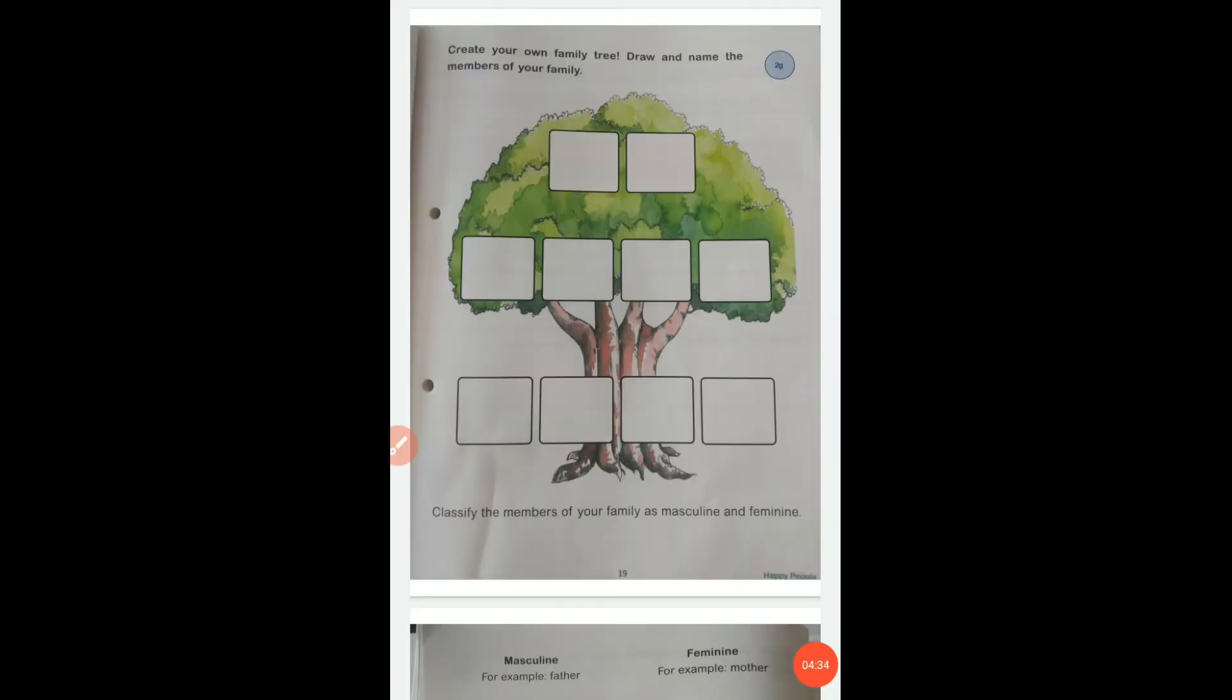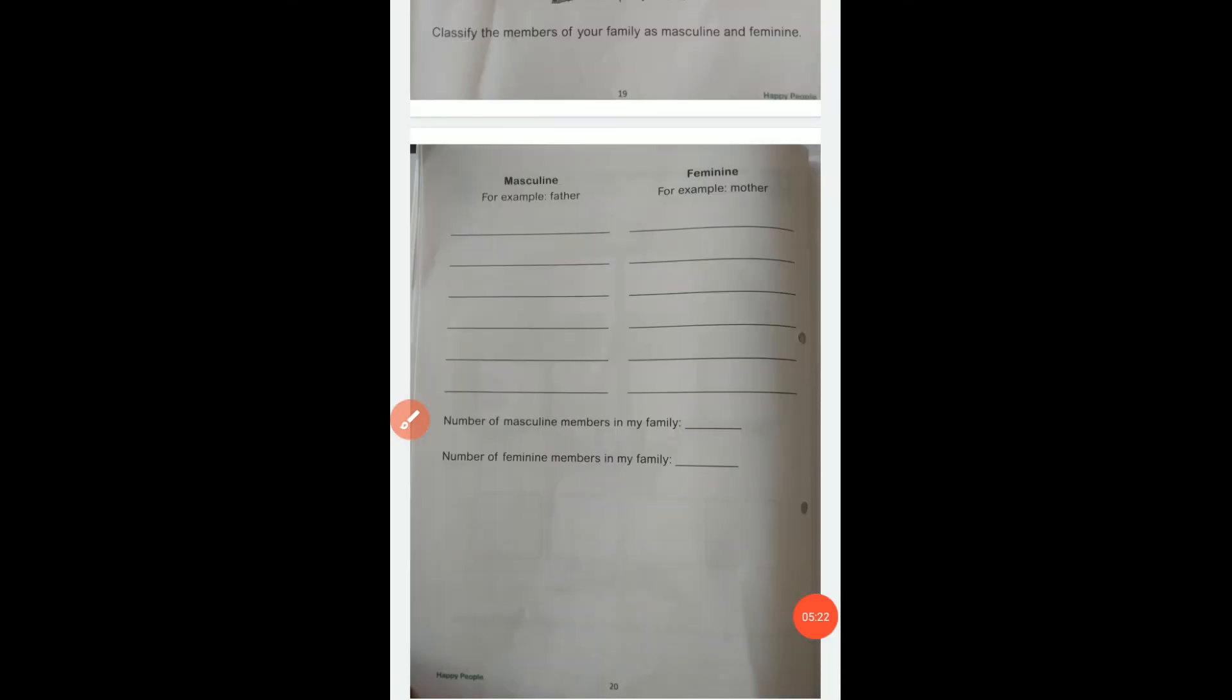Now page number nineteen. Create your own family tree. Draw and name the members of your family. You have to create your family tree here. You can write their names, you can paste their pictures. Then what do you have to do? Classify the members of your family as masculine and feminine. In masculine you will put male members, in feminine you will put female members. You have to create your family tree and then divide them into masculine and feminine categories.